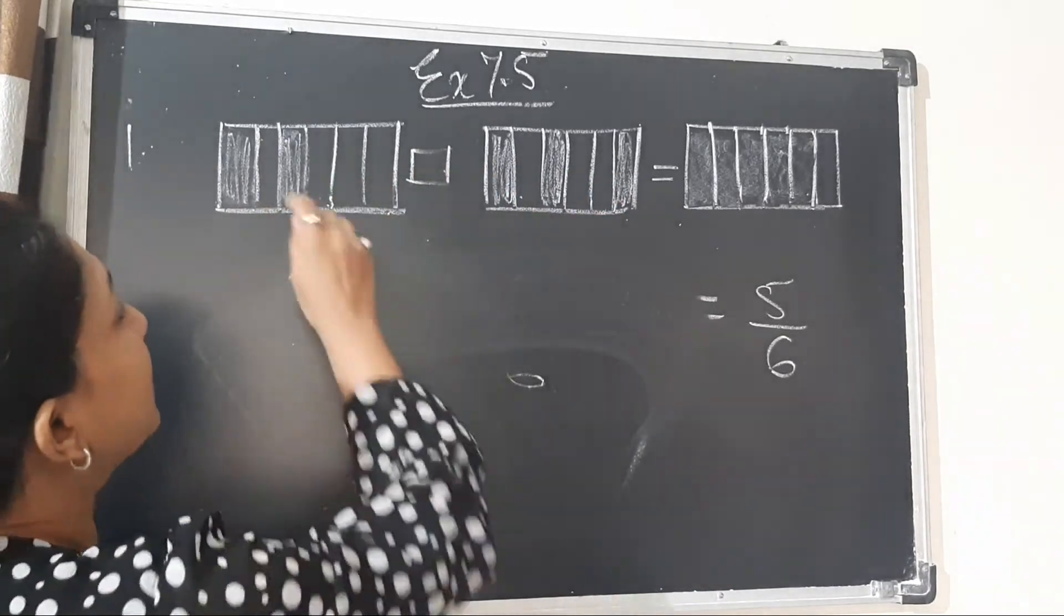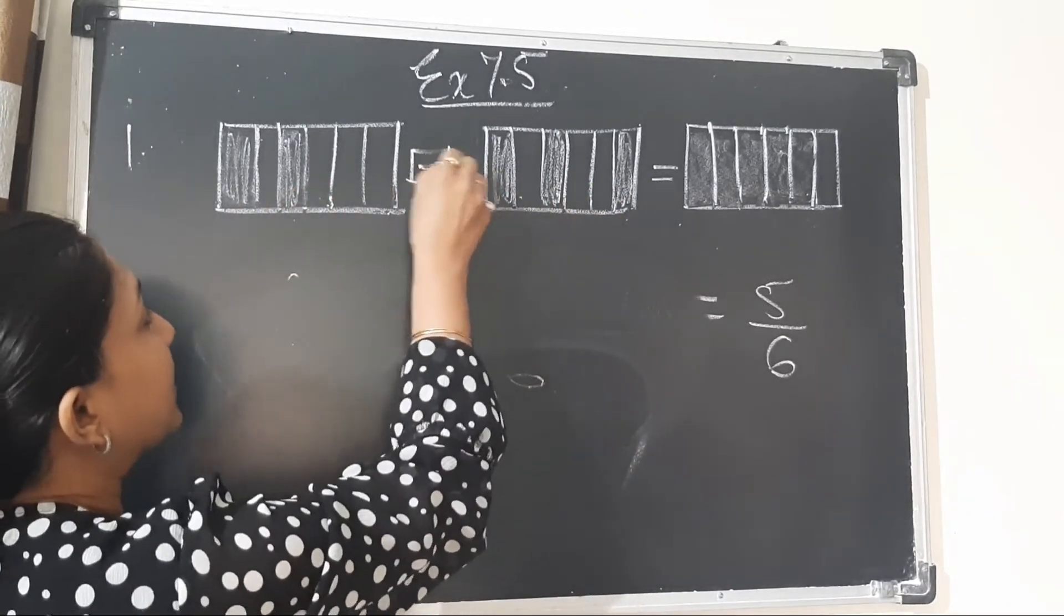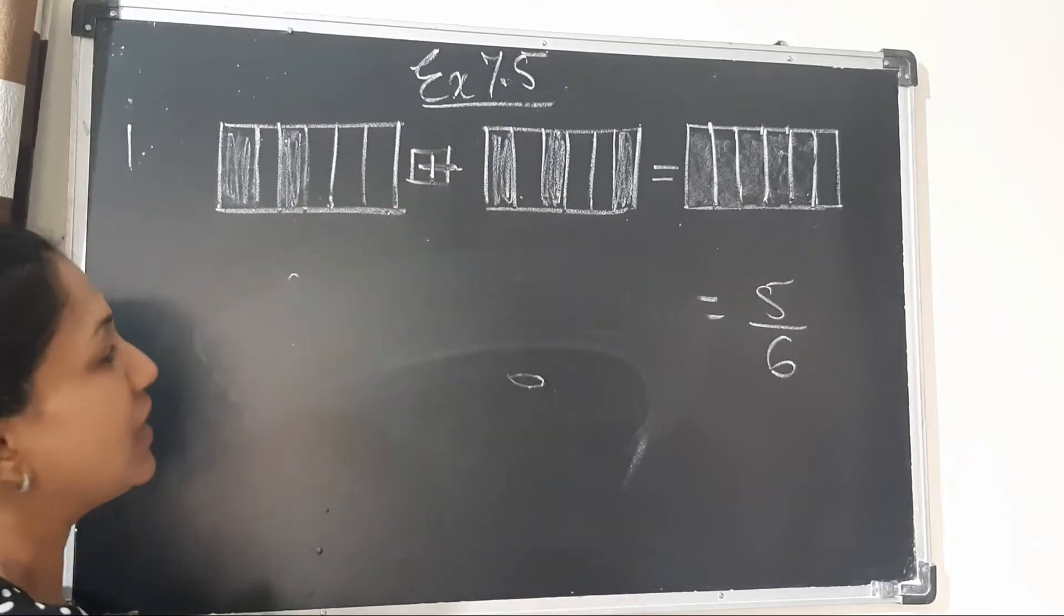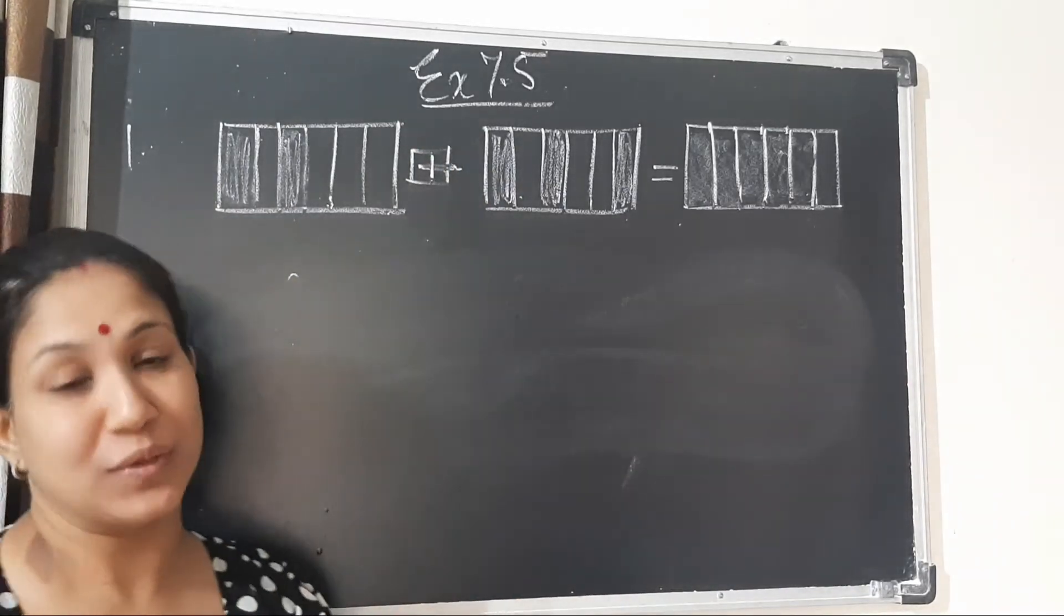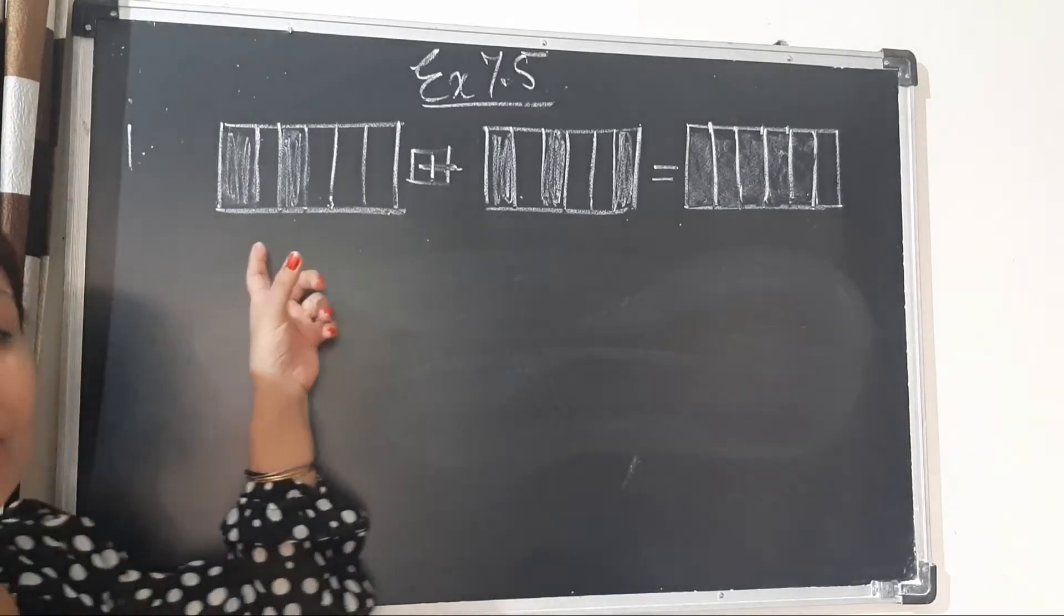You can say that these 2 parts are getting added up. Yes, so this is what you have to do in the first question. You see the number of parts shaded.